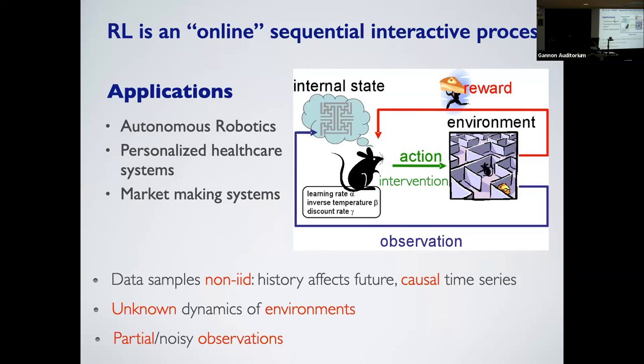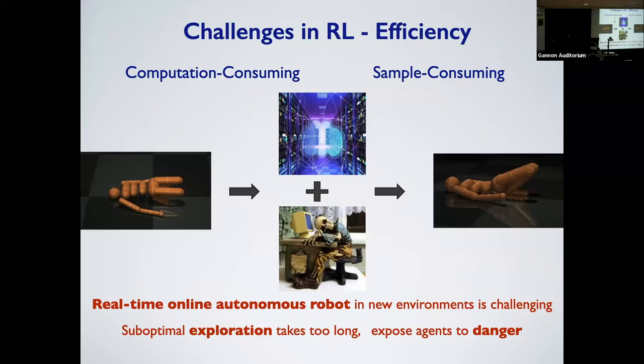Although proven to have great potential, reinforcement learning has some bottlenecks for practical use. First, it is computationally consuming — real-time online autonomous robotics can be really difficult. More importantly, reinforcement learning agents often require many samples to learn. At the beginning of learning, the agent will explore the environment in order to make informed decisions. However, the required lengthy exploration may expose your agent to danger, as they often make sub-optimal decisions or even random explorations.